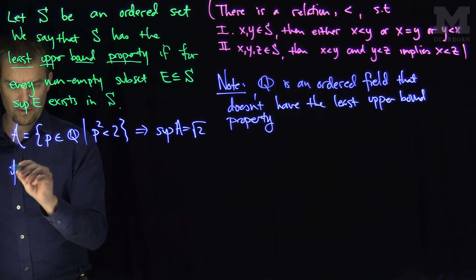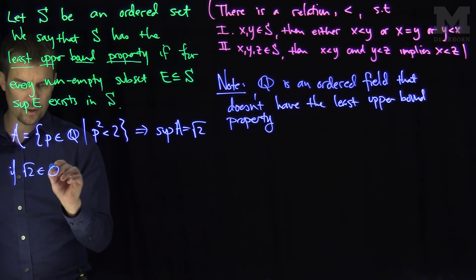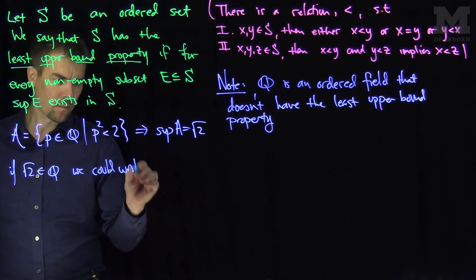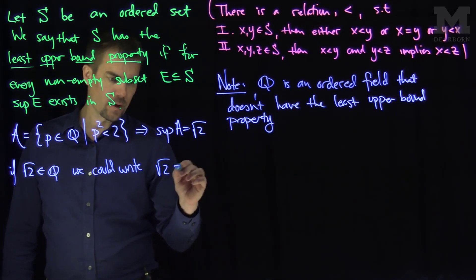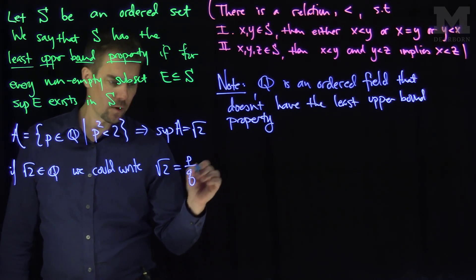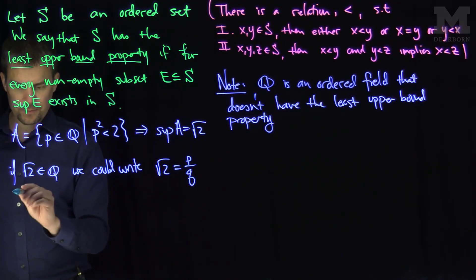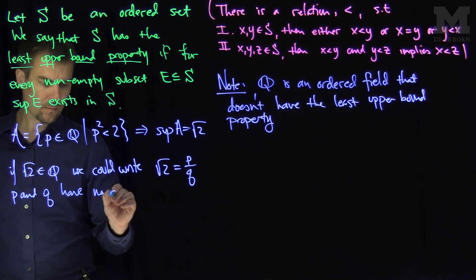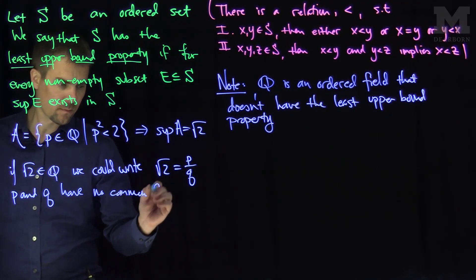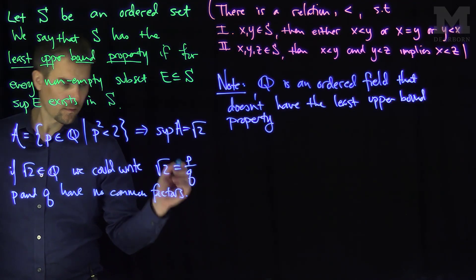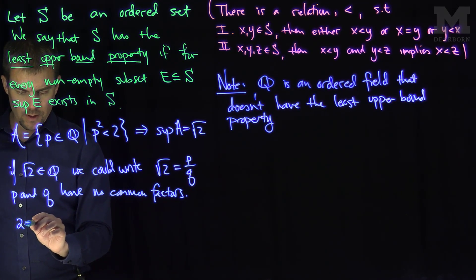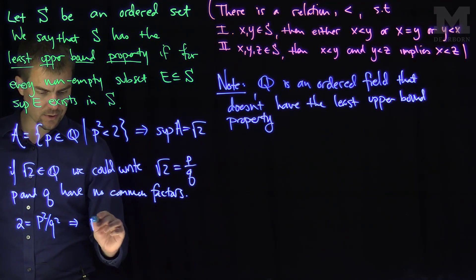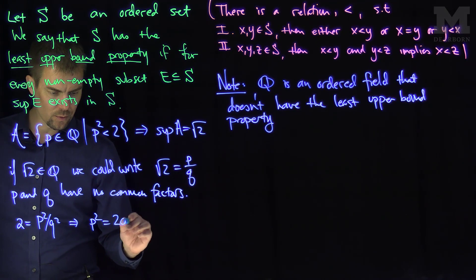If root two were rational, if square root of two were in Q, then we could write root two as p over q, where p and q have no common factors.